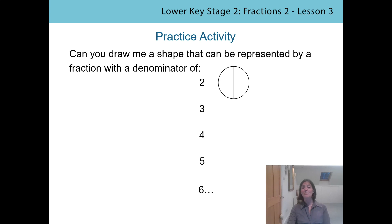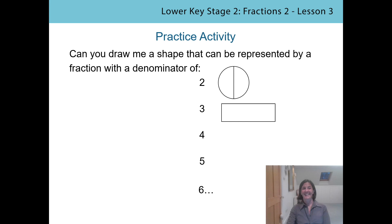If the denominator is two, the circle needs to be divided into two equal parts — and that works. Now I've got a rectangle and I need a fraction with a denominator of three, so how many equal parts does this shape need? It needs to be divided into three equal parts. You might choose different shapes and divide them in different ways, so long as the parts are equal and the number of parts matches the denominator. Have a go at that, and we'll look at it in our next lesson. Take care, bye!